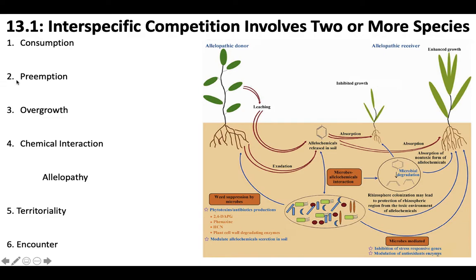Preemption is when occupation by one individual precludes establishment by others. This mostly applies to sessile organisms that can't physically interact in close proximity with their competitors — like a sea anemone. It's something that can come in and colonize a new rock, a new grassland, or a newly exposed area before something else does. That's preemption.